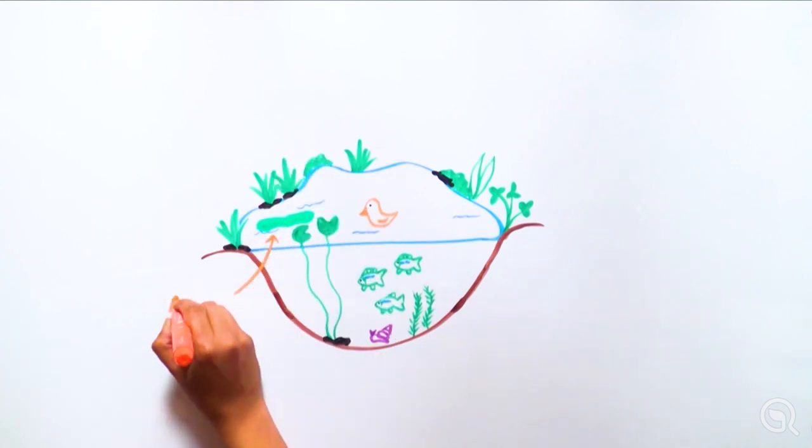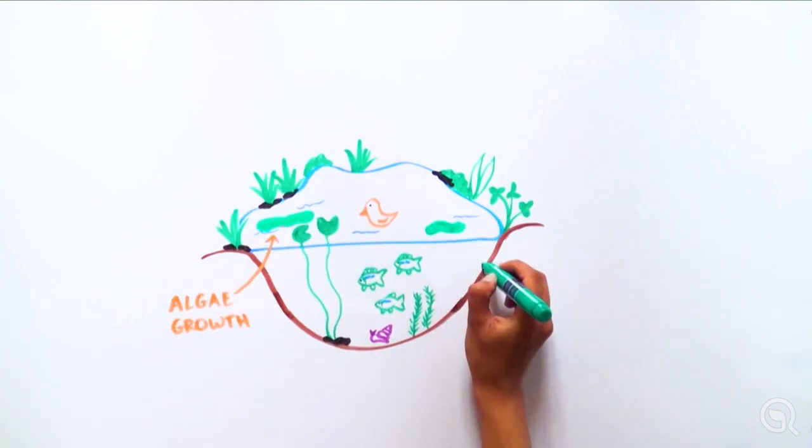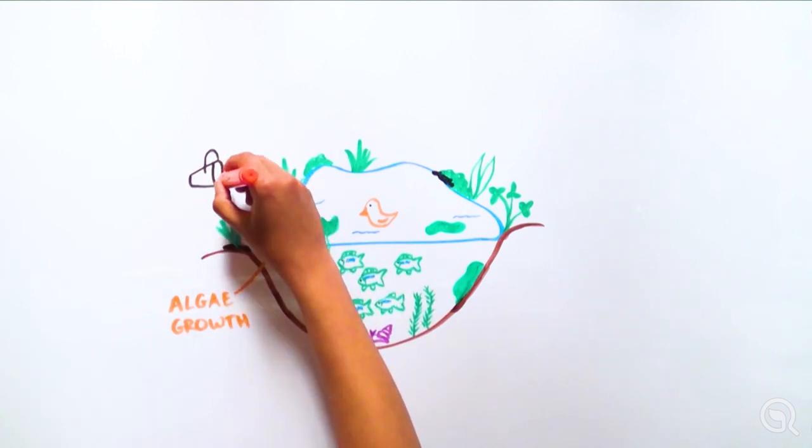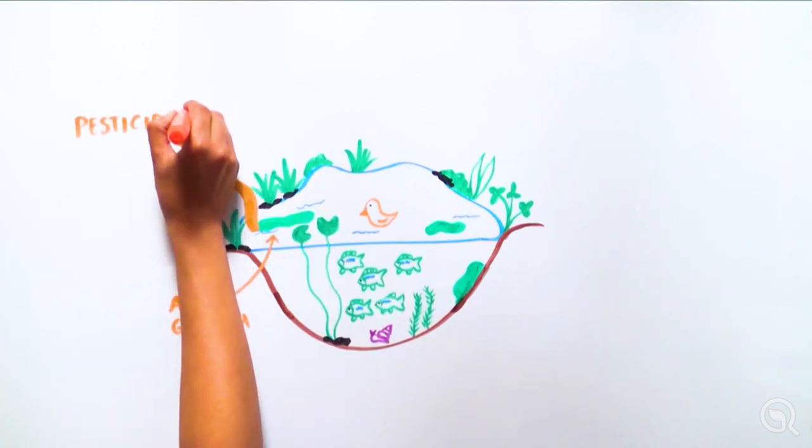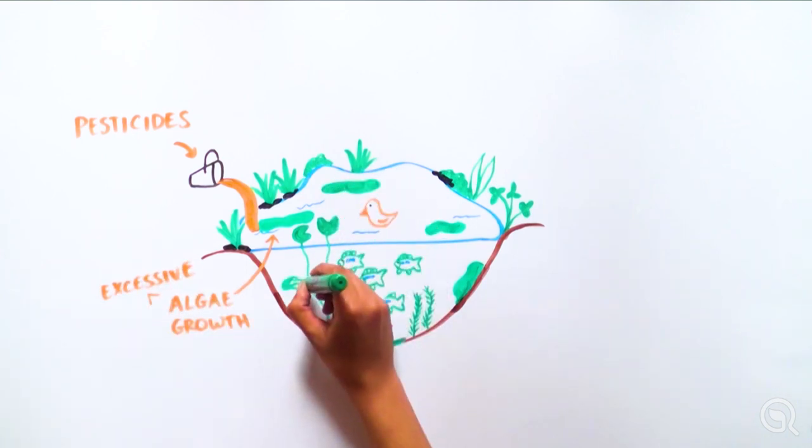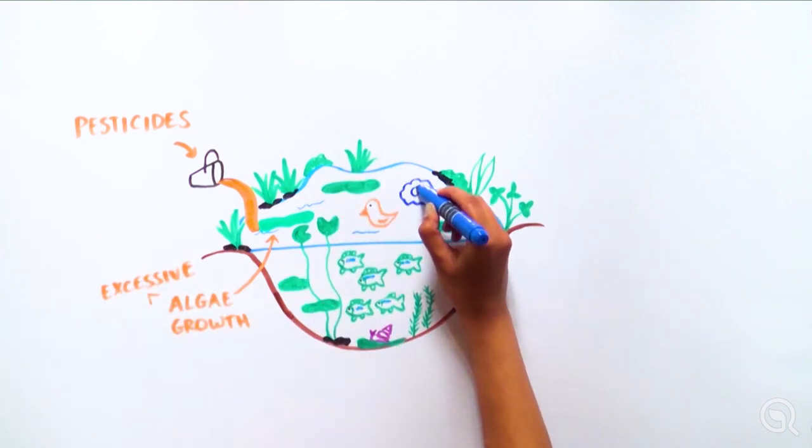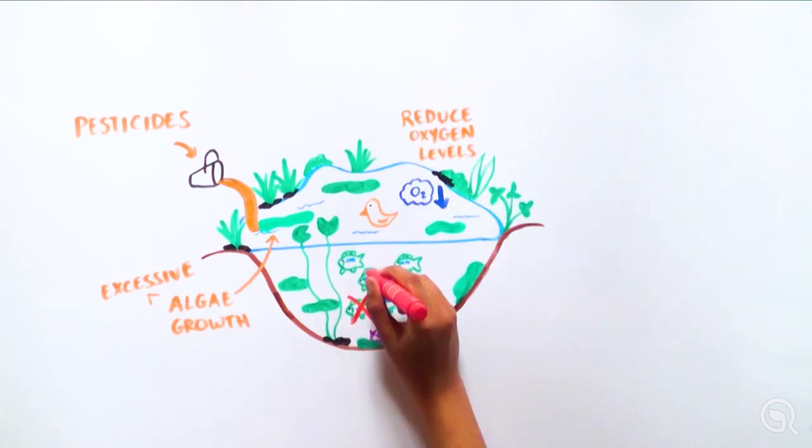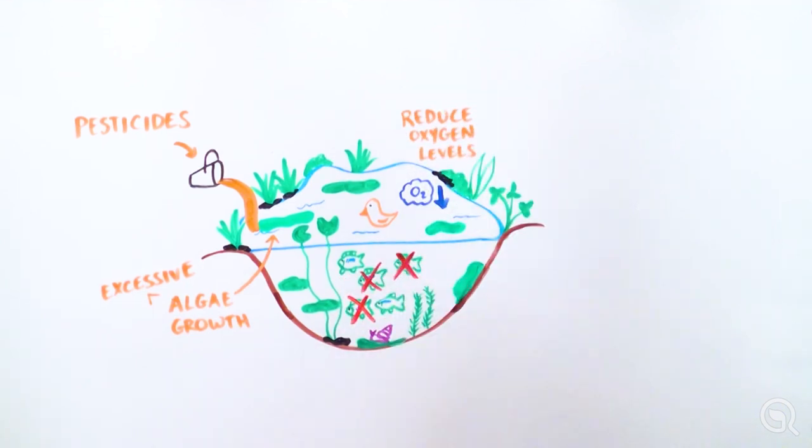For example, consider a population of algae that supports a marine ecosystem. If the algae grow, populations of fish that eat the algae will also grow. But what happens if humans dump large amounts of nutrient-rich pesticides or detergents in the waterway? This can lead to excessive growth of algae in plants, which can choke up the waterway and reduce oxygen levels, ultimately killing the fish instead of increasing their population.